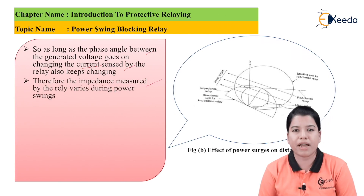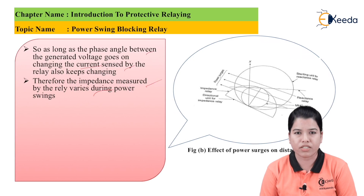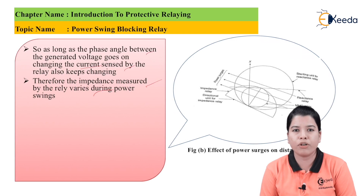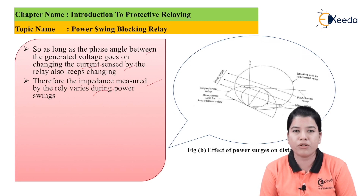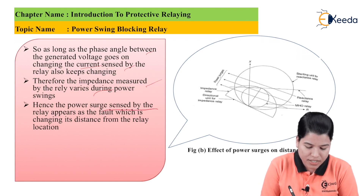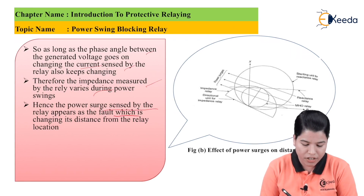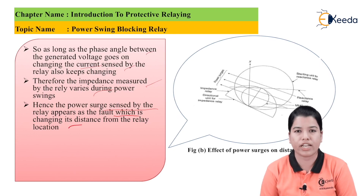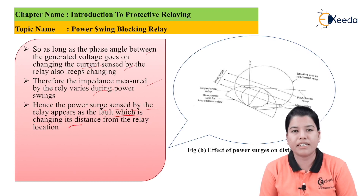Therefore, the impedance measured by the relay will vary during the power swings. In case of a distance relay, it operates when the value of impedance drops below a particular value, so the change in impedance will be continuously sensed. Under continuous power swings, the relay will not be able to decide whether it is a normal or faulty condition. The power surge sensed by the relay appears as a fault which is changing its distance from the relay location.